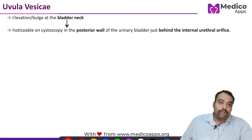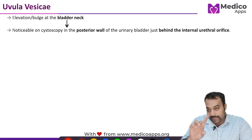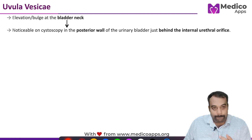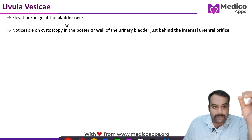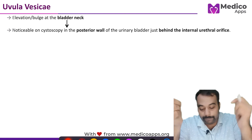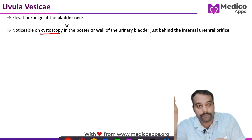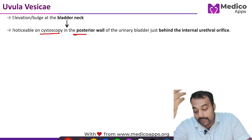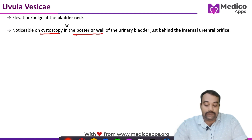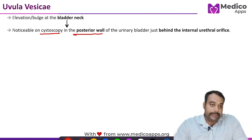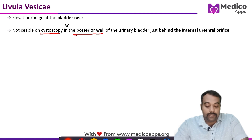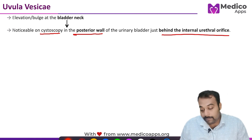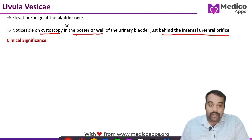What happens is that there is an elevation or bulge that has been noted typically at the bladder neck. This elevation is typically seen on cystoscopy, in the posterior wall of the urinary bladder, just beneath the internal urethral orifice. That is basically your uvula vesicae.